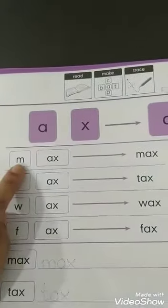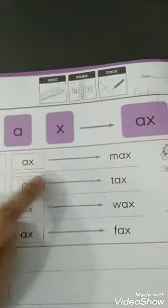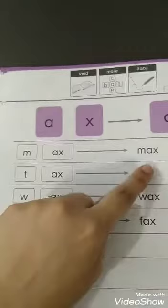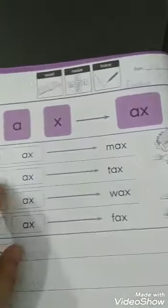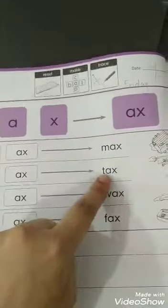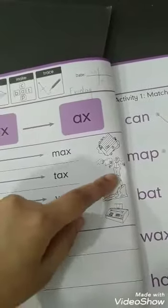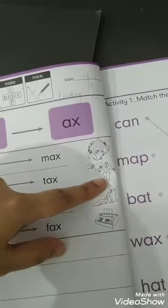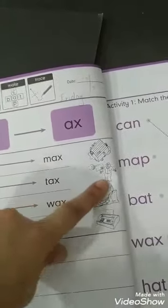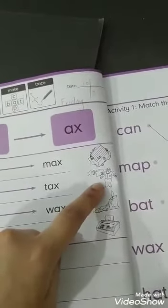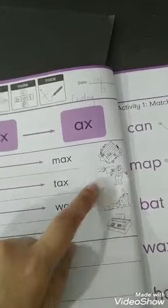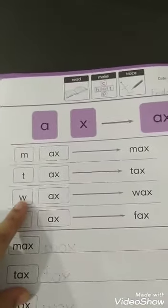First word is X Max. X Max. Max is a soap. Here is a picture of soap. X Tax. Tax is money that people have to pay to the government. As we give a bill, as we give a tax, this is money that we give to government.